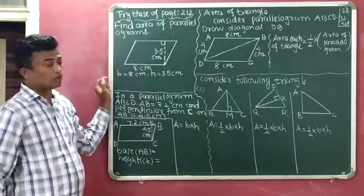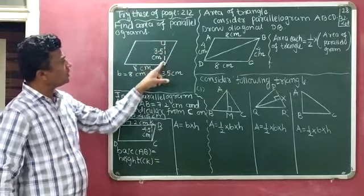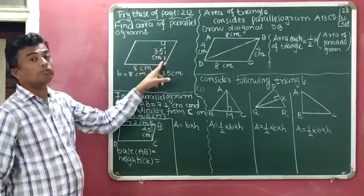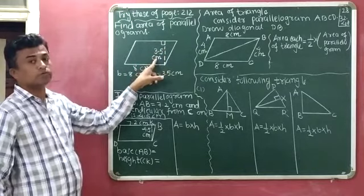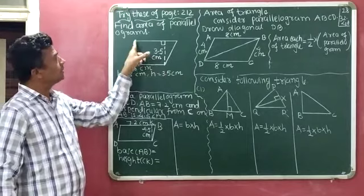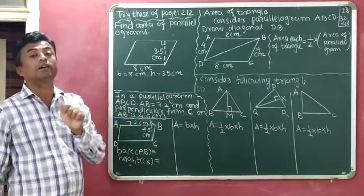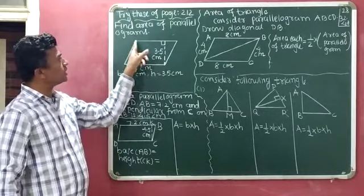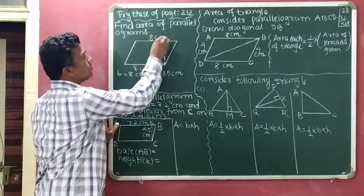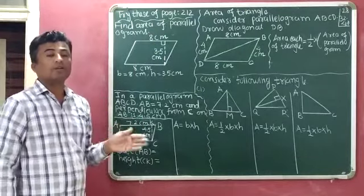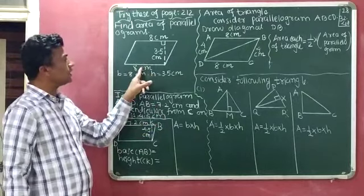This is the figure of a parallelogram. This side length is 8 cm and the height or altitude of the parallelogram is 3.5 cm. We know that in a parallelogram, opposite sides are equal in length, so the opposite side is also 8 cm.